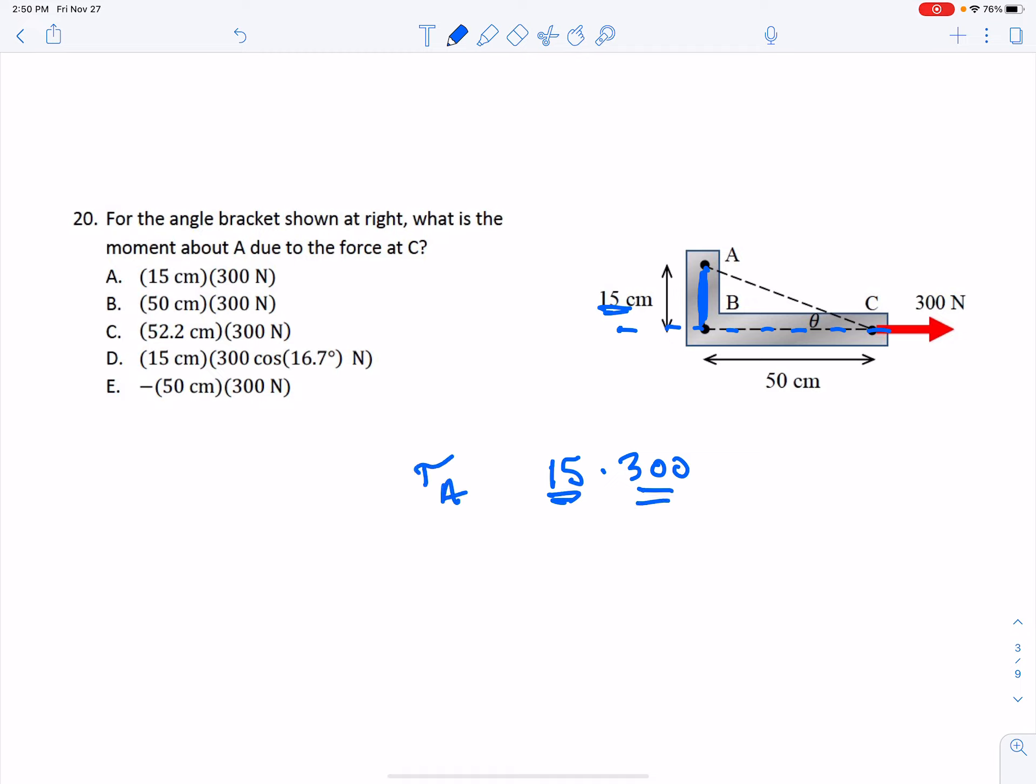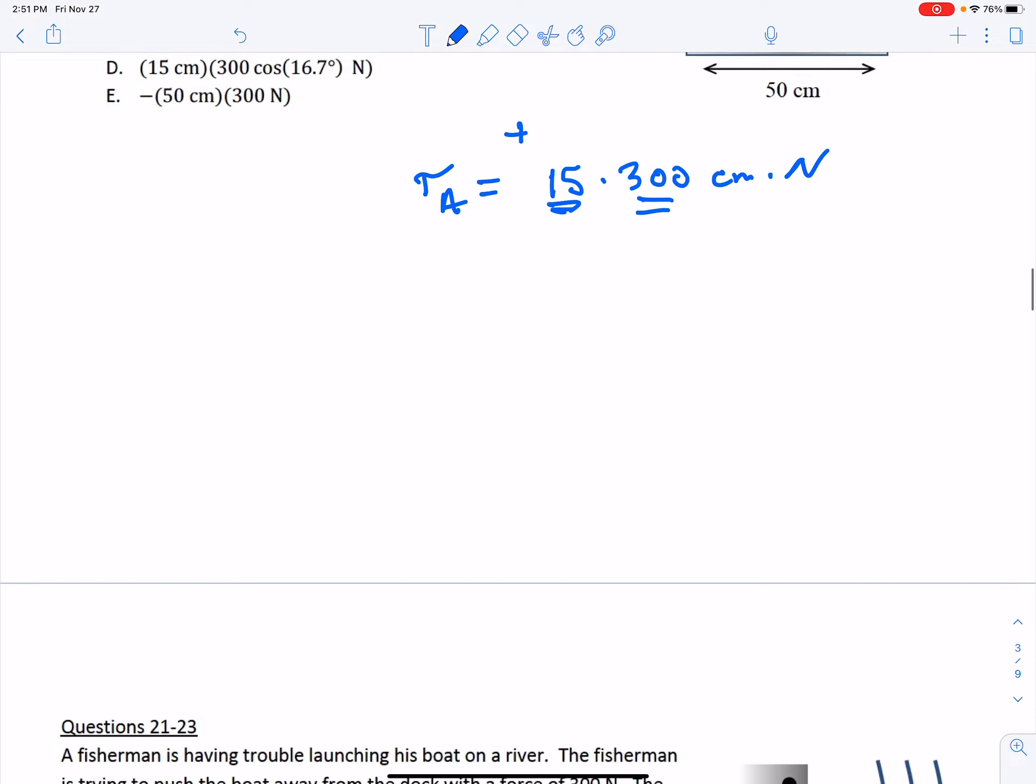So that's 15 centimeters. 15 times 300 gives me the torque at A. This would be counterclockwise rotation, so this would be positive. The units here, I didn't ask for a conversion, it's centimeters times newtons. So the answer here would be A.